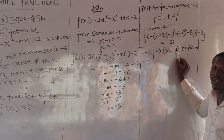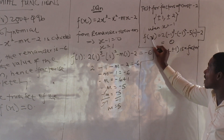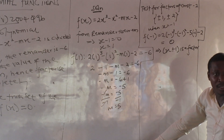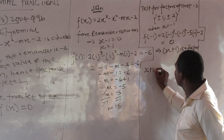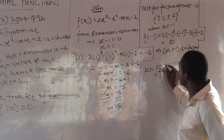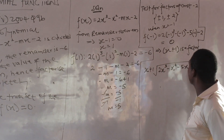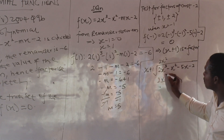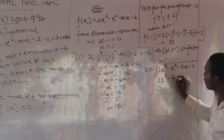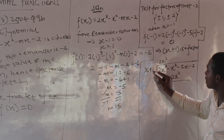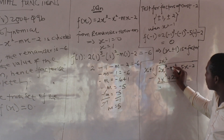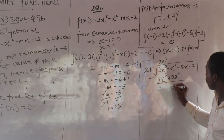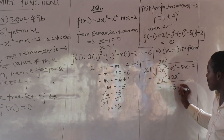Since x plus 1 is a factor, we do long division. So I divide 2x cubed minus x squared minus 5x minus 2 by (x plus 1). The first term: 2x squared. 2x squared times x gives 2x cubed. 2x squared times 1 gives plus 2x squared. Subtracting: minus x squared minus 2x squared gives minus 3x squared. Be careful with the negatives.